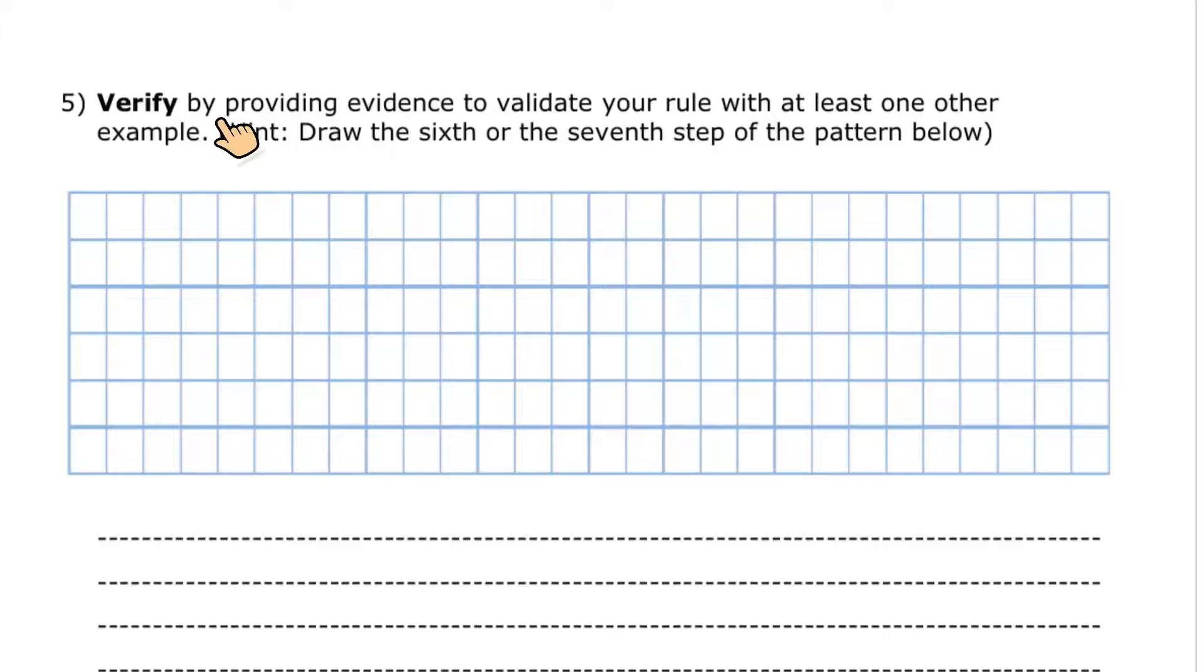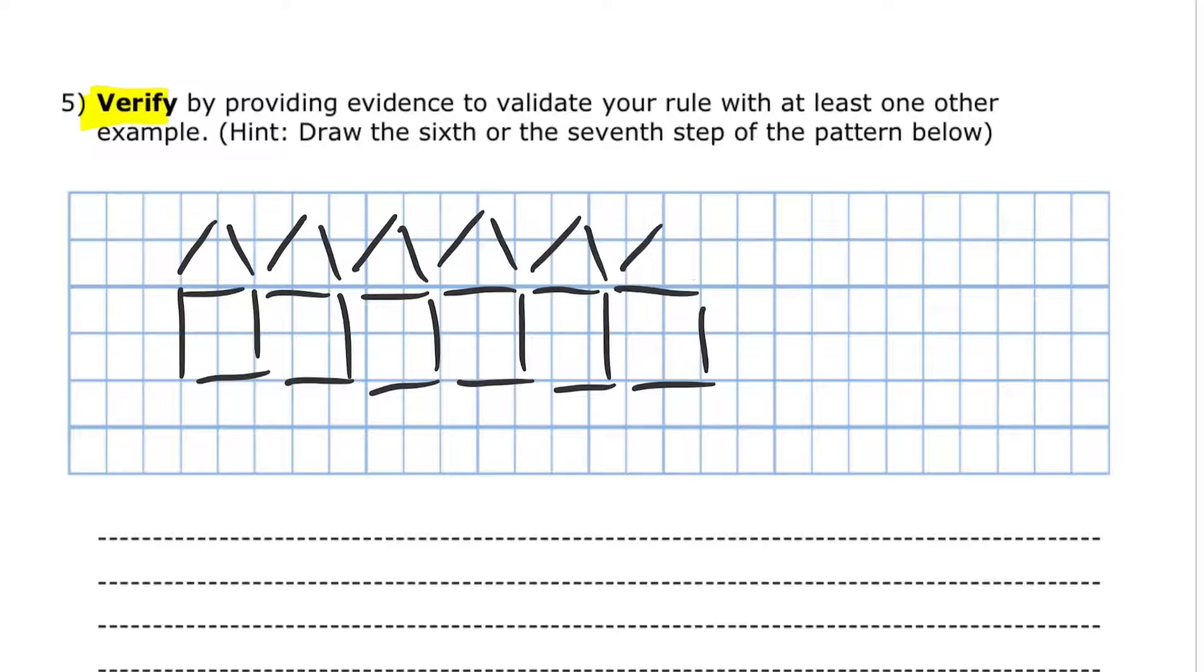Question 5 says, verify by providing evidence to validate your rule with at least one other example. Hint, draw the sixth or the seventh step of the pattern. So what we're going to do is we're going to draw the sixth shape. And let's just count how many matchsticks we have. 31 matchsticks.